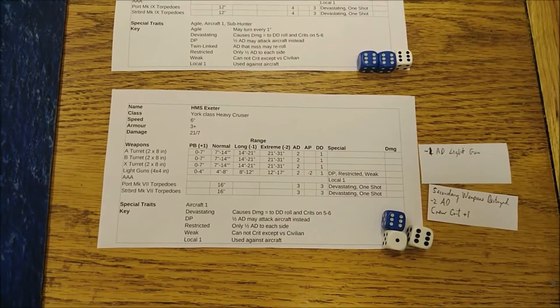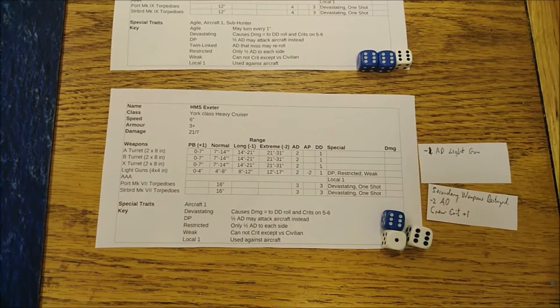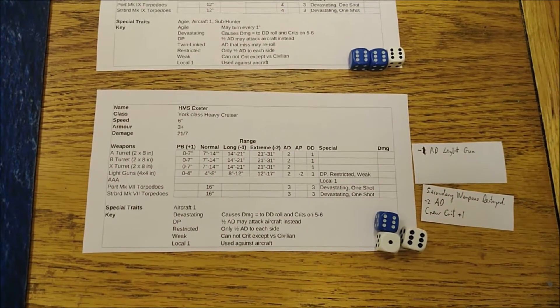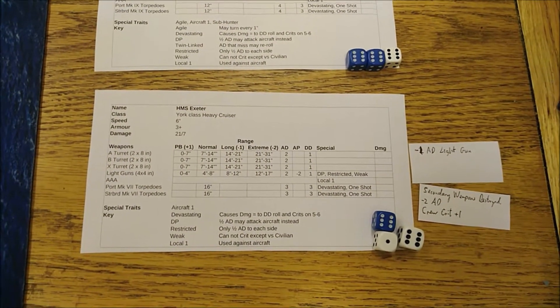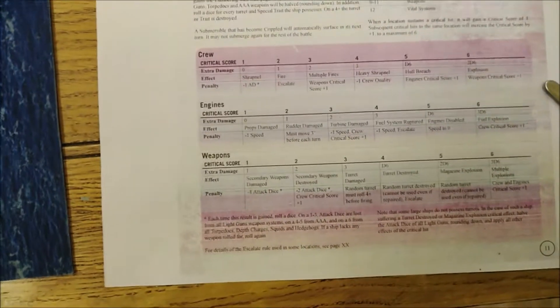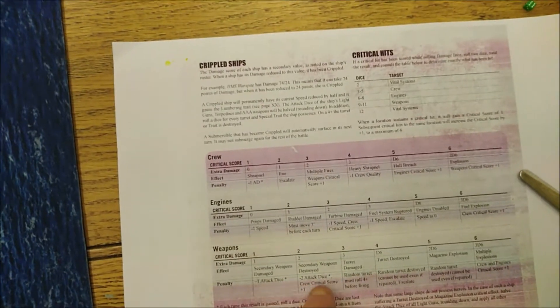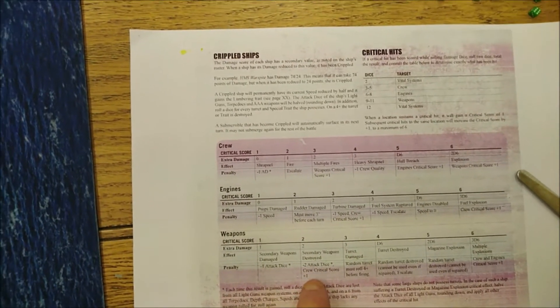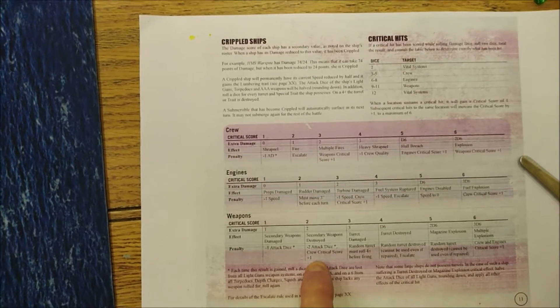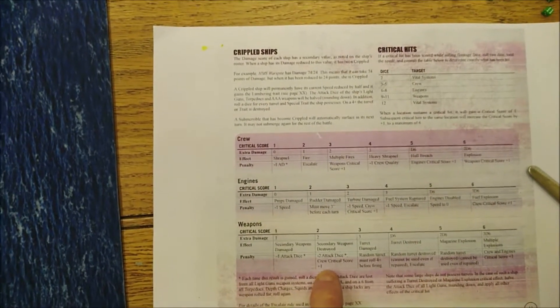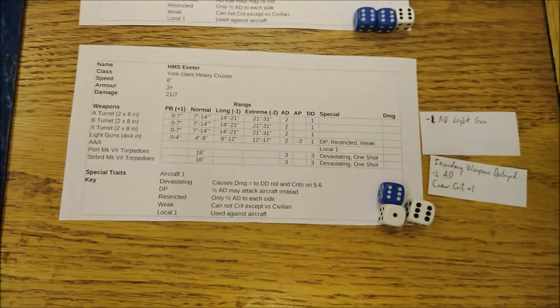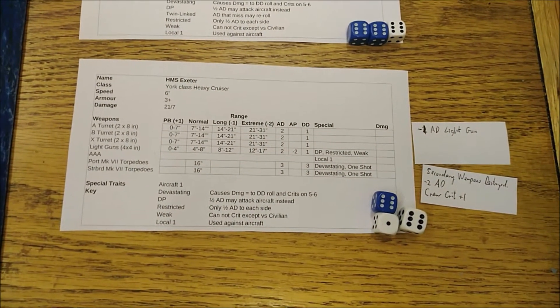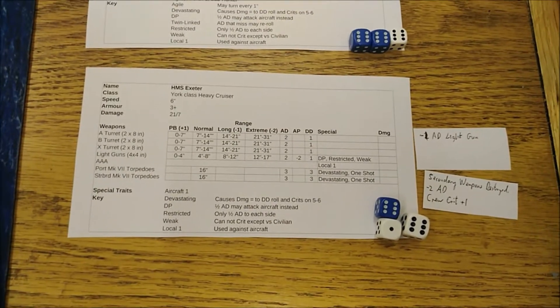All right, so before we start turn four, just a little correction to the damage to Exeter. When she took the second weapons hit, she should have moved up one from a state one critical score one to critical score two, which means a secondary weapon system is destroyed. She's got managed to attack dice and crew's critical damage rolls get a plus one. So I've added that onto the chart there. It means it's slightly harder for her to repair, you can only repair one critical hit a turn.